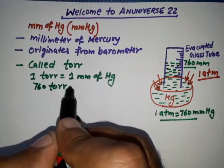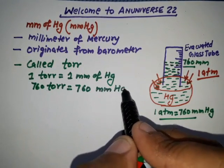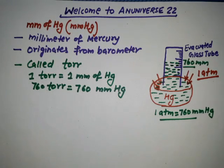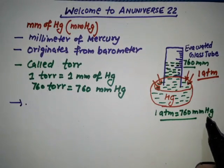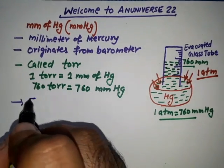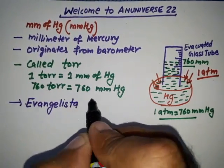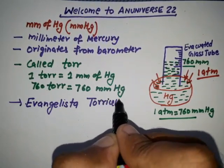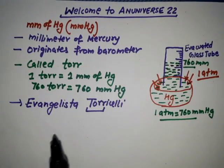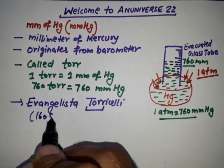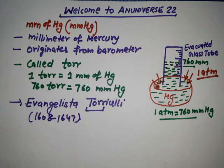This term mm of mercury was invented by Evangelista Torricelli. The unit torr is named after him. His lifespan was 1608 to 1647. He was a physicist who came up with the first barometer. This is a unit of pressure, and now we will discuss another unit.